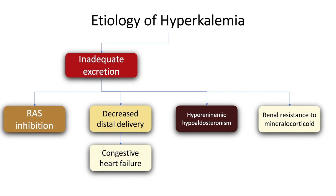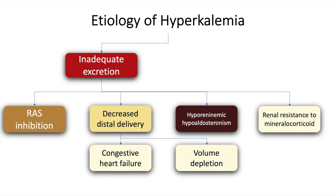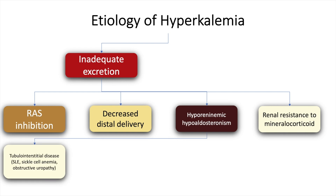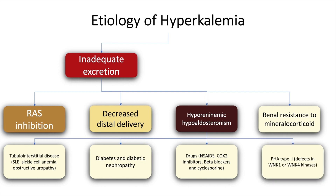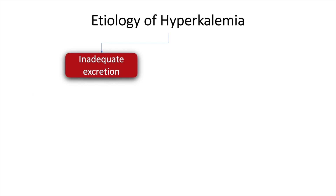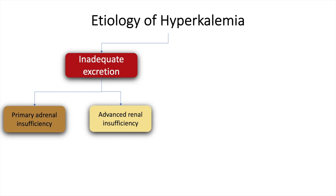Decreased distal delivery may occur because of congestive heart failure and volume depletion. Hypo-reninemic hypoaldosteronism may occur because of tubulointerstitial disease such as in systemic lupus erythematosus and sickle cell anemia, diabetes, and because of drugs such as NSAIDs and COX-2 inhibitors. It may also occur because of pseudohypoaldosteronism type 2, which is due to a defect in the WNK1 and WNK4 kinases.